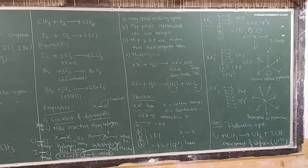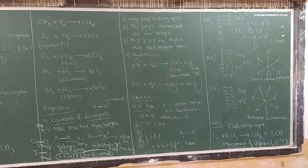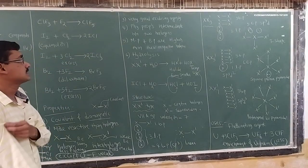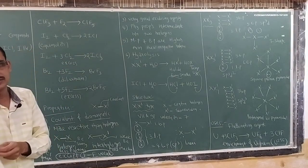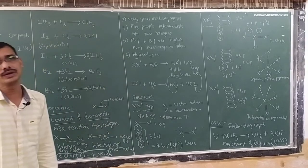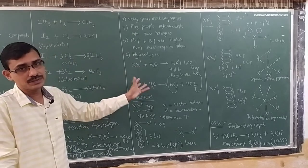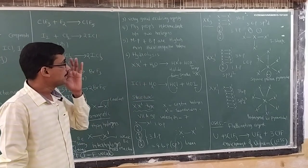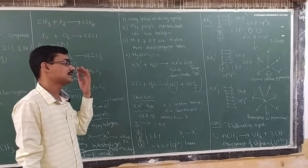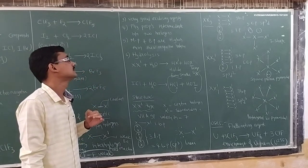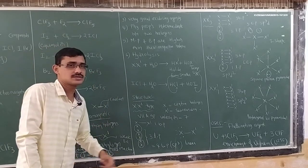Third property: interhalogen compounds are very good oxidizing agents. Physical properties are intermediate between the two constituent halogens. For example, if a compound is made of iodine and chlorine, its properties will be intermediate between iodine and chlorine. Melting points and boiling points of interhalogens are higher when compared with the constituent halogens.